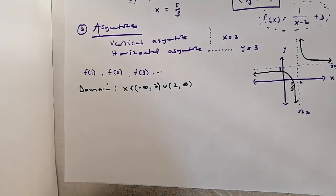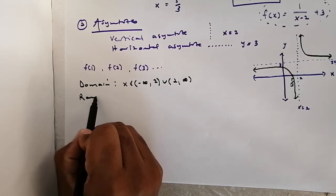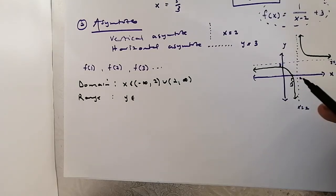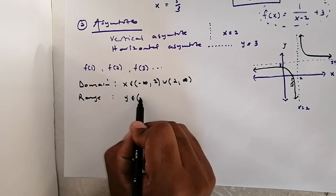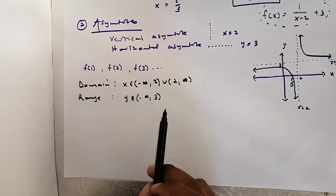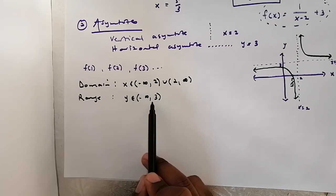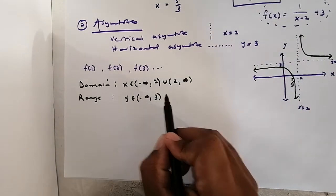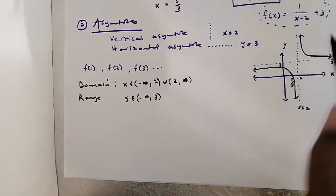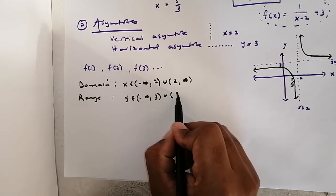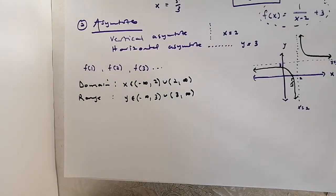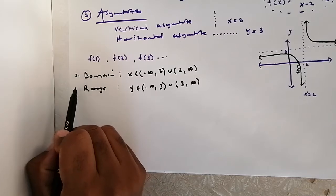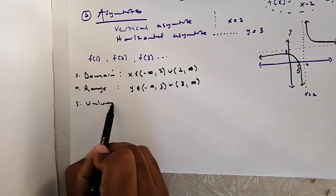The range is where the graph is defined vertically. From negative infinity the graph goes up until y = 3, where it is not defined — that's why we use open brackets. Then from 3 upward to positive infinity the graph is defined. So the range is y ∈ (−∞, 3) ∪ (3, +∞).